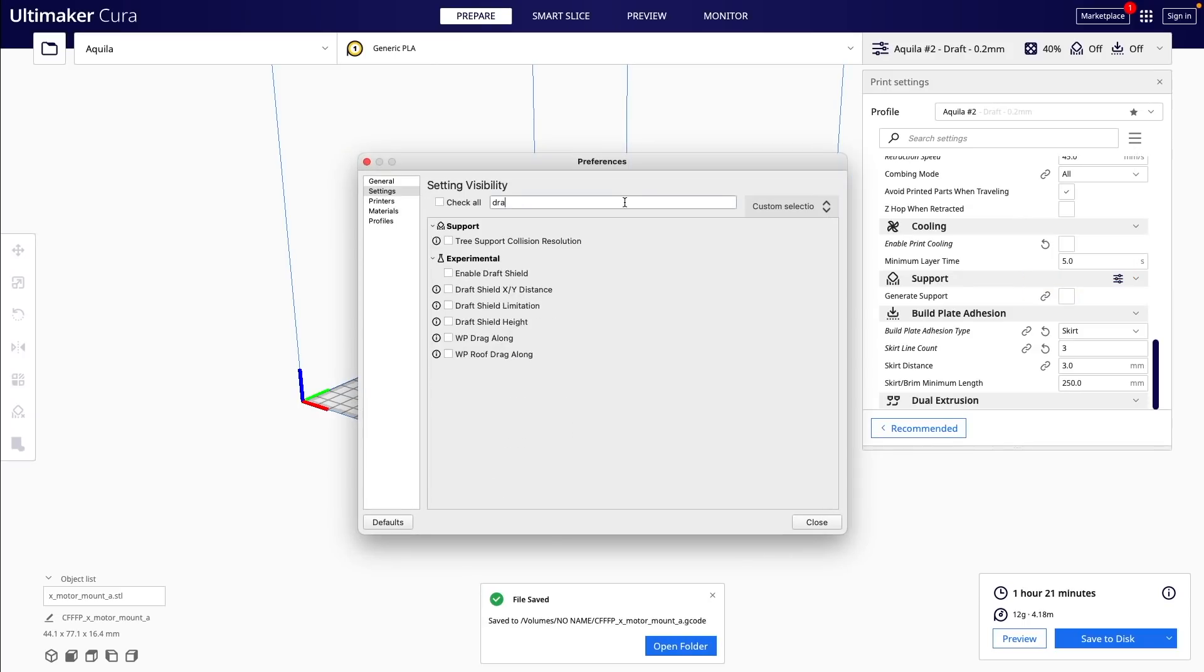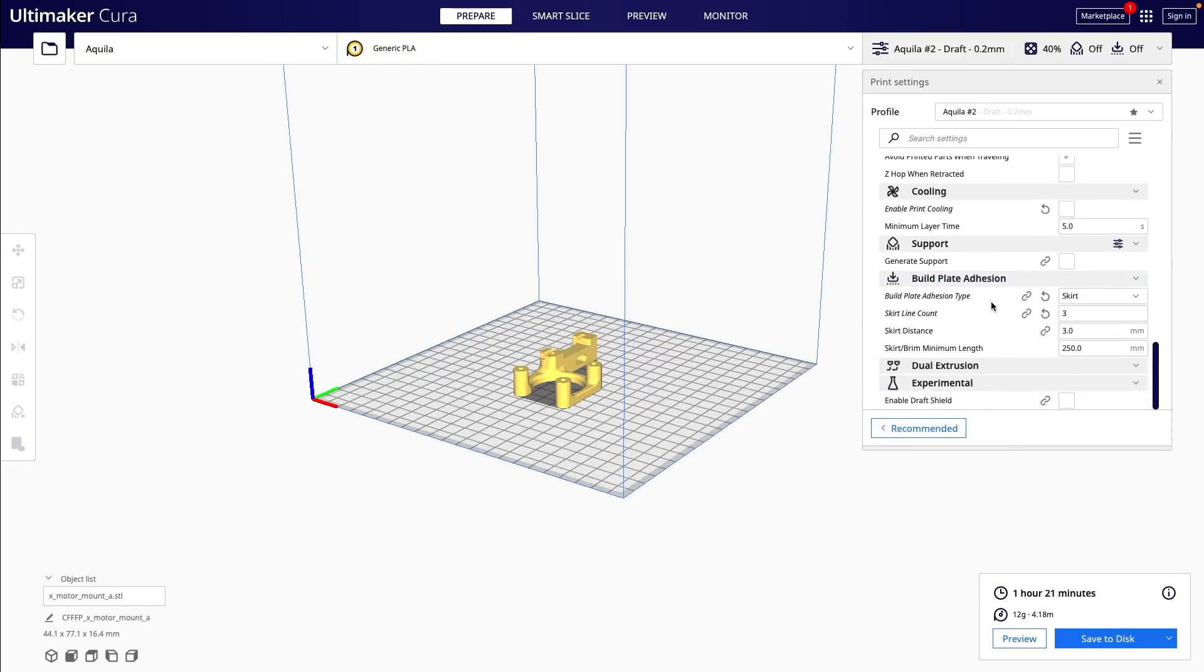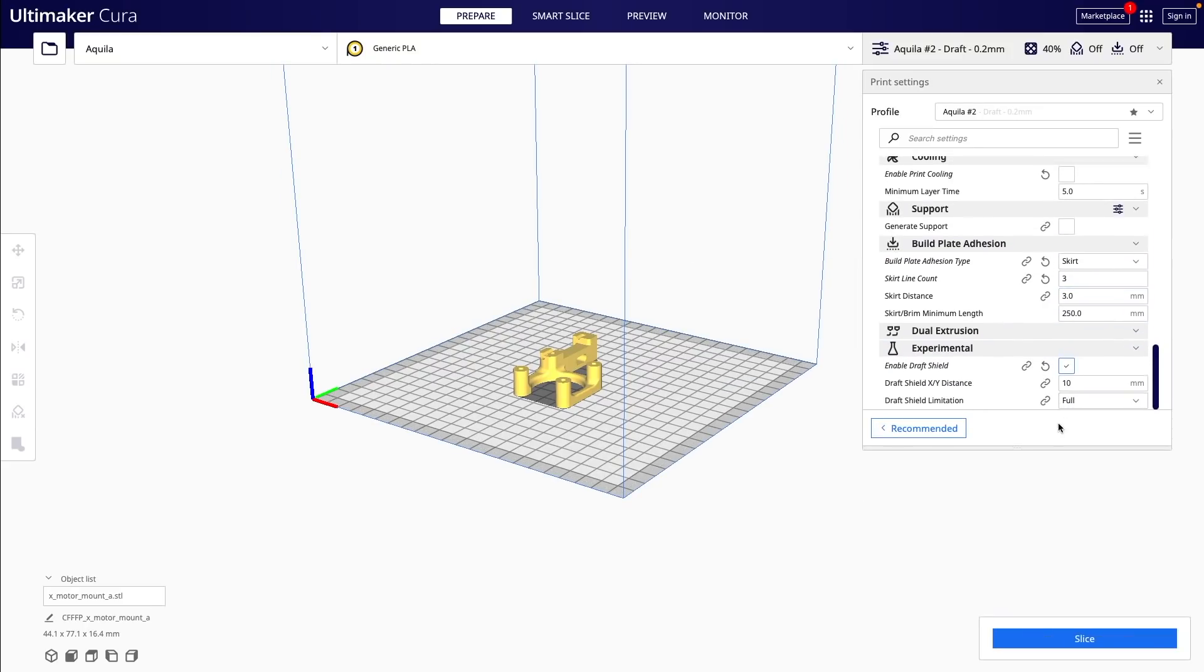In the search bar, if you type the word draft, you'll see draft shields and a few other settings that we'll want to enable. After we close out of the menu, if we scroll down to experimental in the print settings, we'll now see draft shields. But what is a draft shield? Cura describes them as a wall around your model that traps hot air in and shields from external airflow.